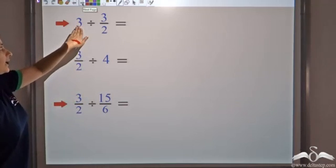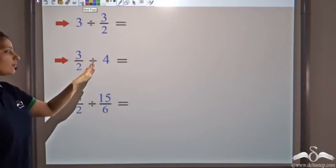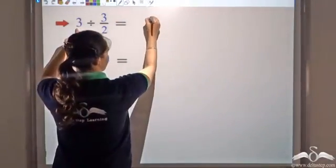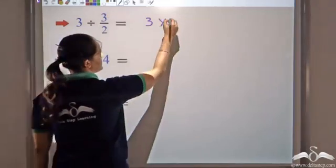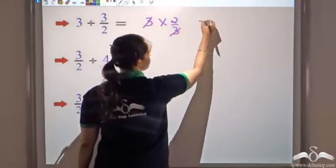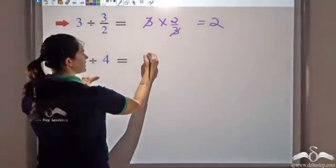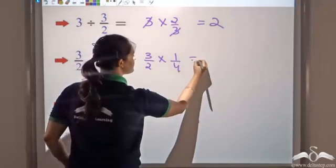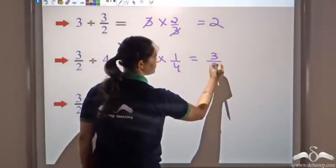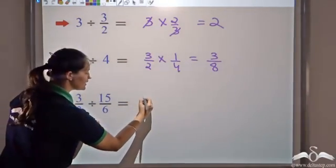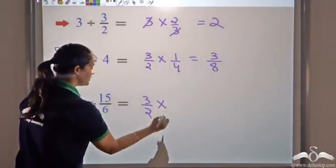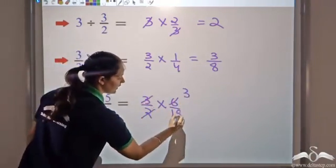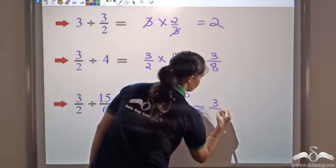Now let's look at three different types: an integer divided by a rational number, a rational number divided by an integer, and a rational number divided by a rational number. For the first: write the first number as it is, convert division to multiplication, reciprocate — giving 2 by 3, the 3s cancel, answer is 2. For the second: first number as it is, convert to multiplication, reciprocate giving 1 by 4, so 1 times 3 is 3 and 2 times 4 is 8, answer is 3 by 8. For the third: first number 3 by 2, convert to multiplication, reciprocate giving 6 by 15, so 2 times 3 is 6 and 3 times 5 is 15, giving 3 by 5.